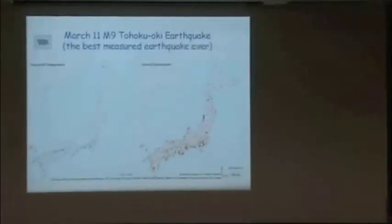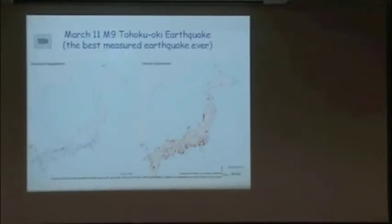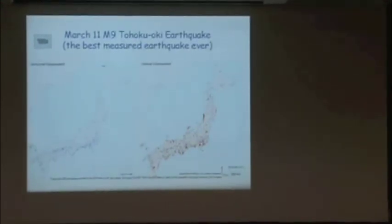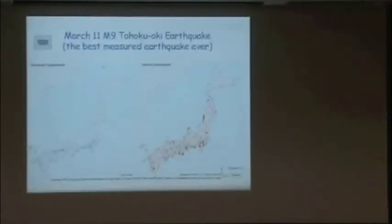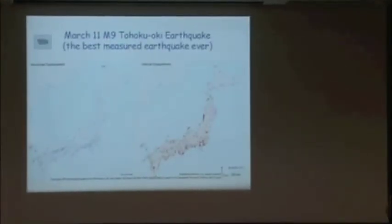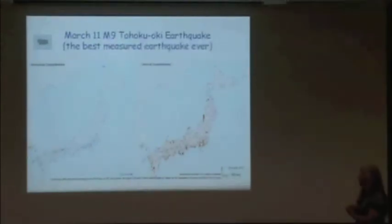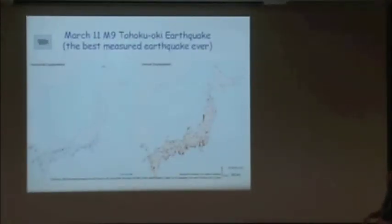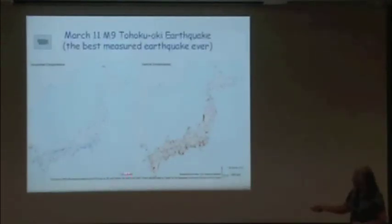The Tohoku-Oki earthquake was the best measured earthquake ever. The Japanese GPS station network measures location every second and every 30 seconds and sends data to a central location. The left side of the display shows horizontal displacement — north-south and east-west — and the right side shows up-down movement. If you see an arrow of a given length, it indicates how many meters that spot moved — for instance, one reference arrow equals one meter of movement.